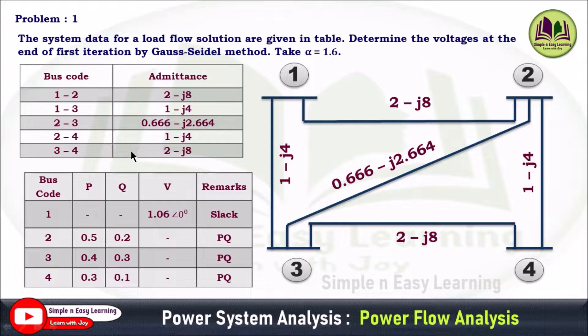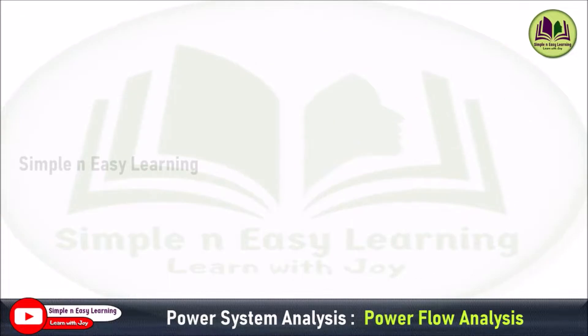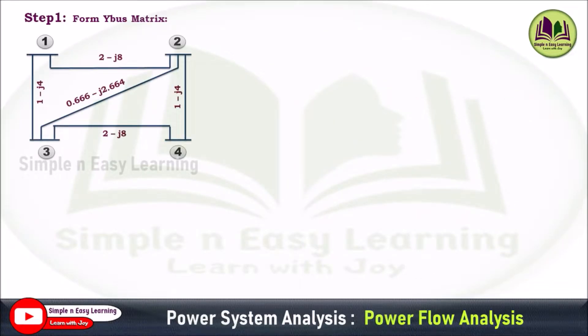Now, in the Gauss-Seidel method, the very first step is to determine the Y-bus matrix. Consider the network — in this network, line charging admittances are not given, so we are going to consider only the admittances given in the problem. First, we determine the diagonal elements of the Y-bus matrix.